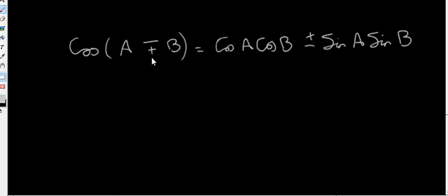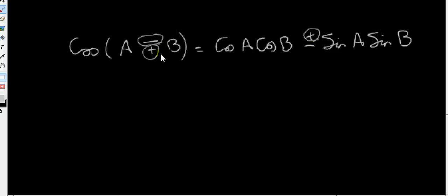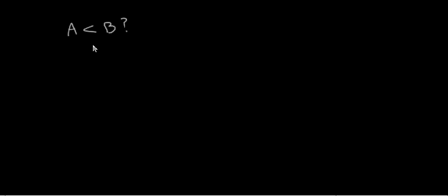We can summarize both identities together: cos(A ∓ B) = cosA·cosB ± sinA·sinB. If we use the minus sign on the left, we get a plus on the right; if we use the plus sign on the left, we get a minus on the right.